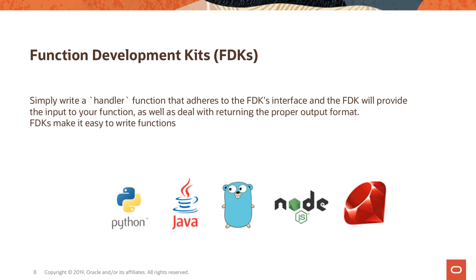There are Function Development Kits for five languages that are first-class citizens right now: Python, Java, Go, Node.js, and Ruby. But if you can containerize something in Docker containers, you can run it in OCI.